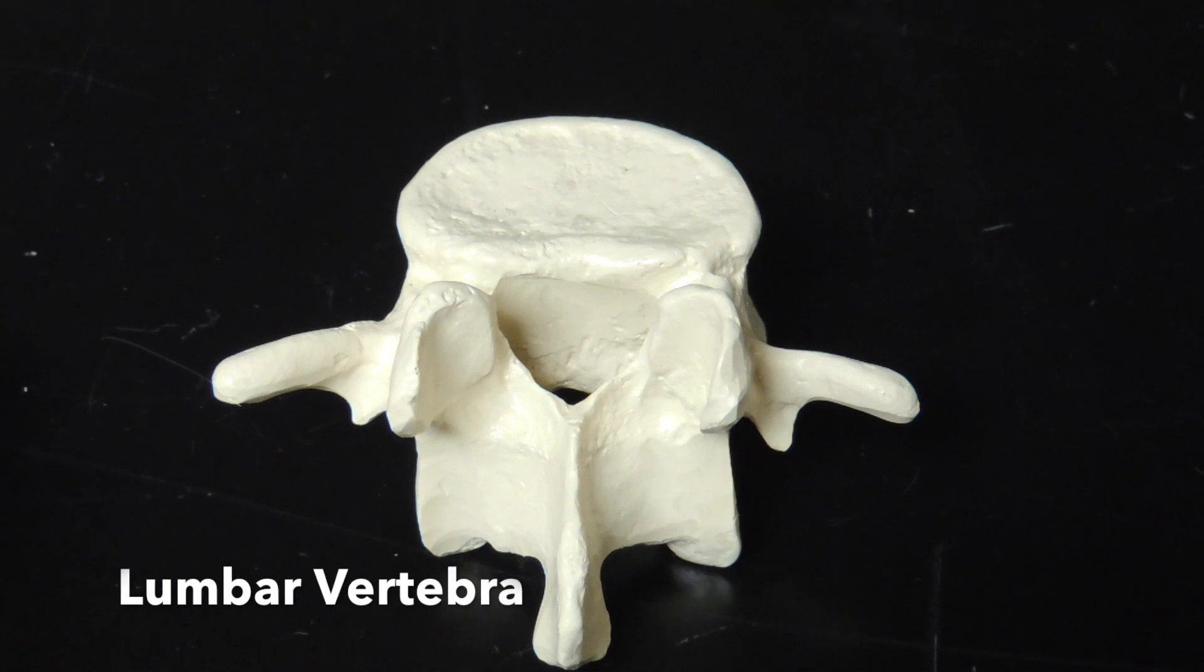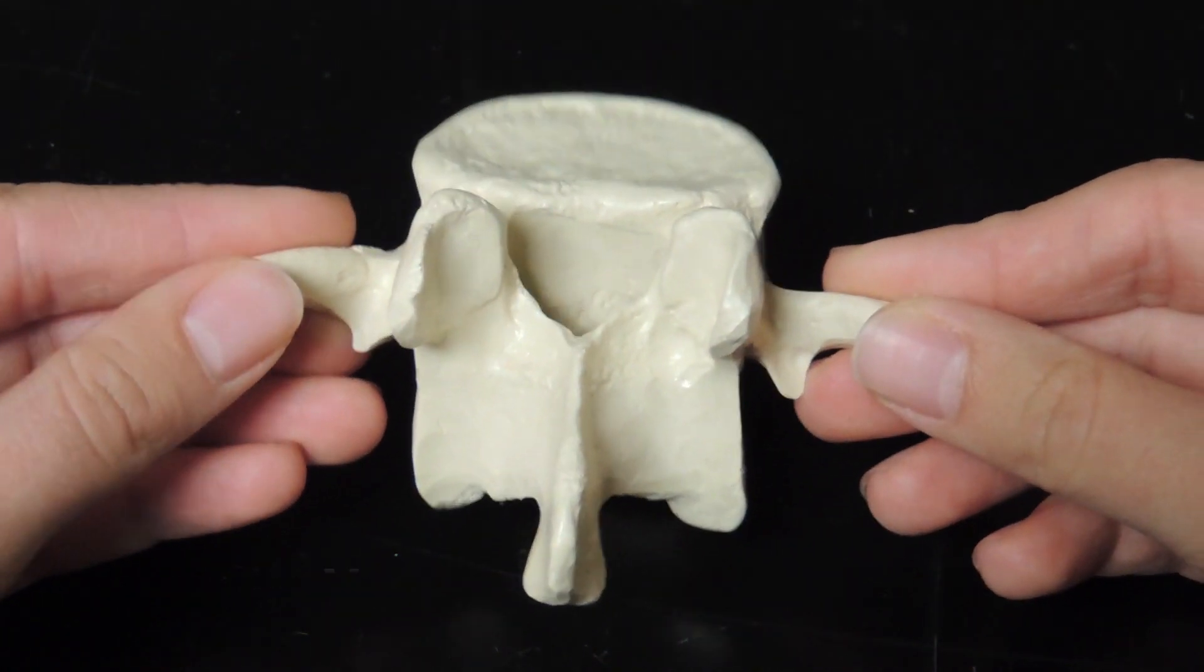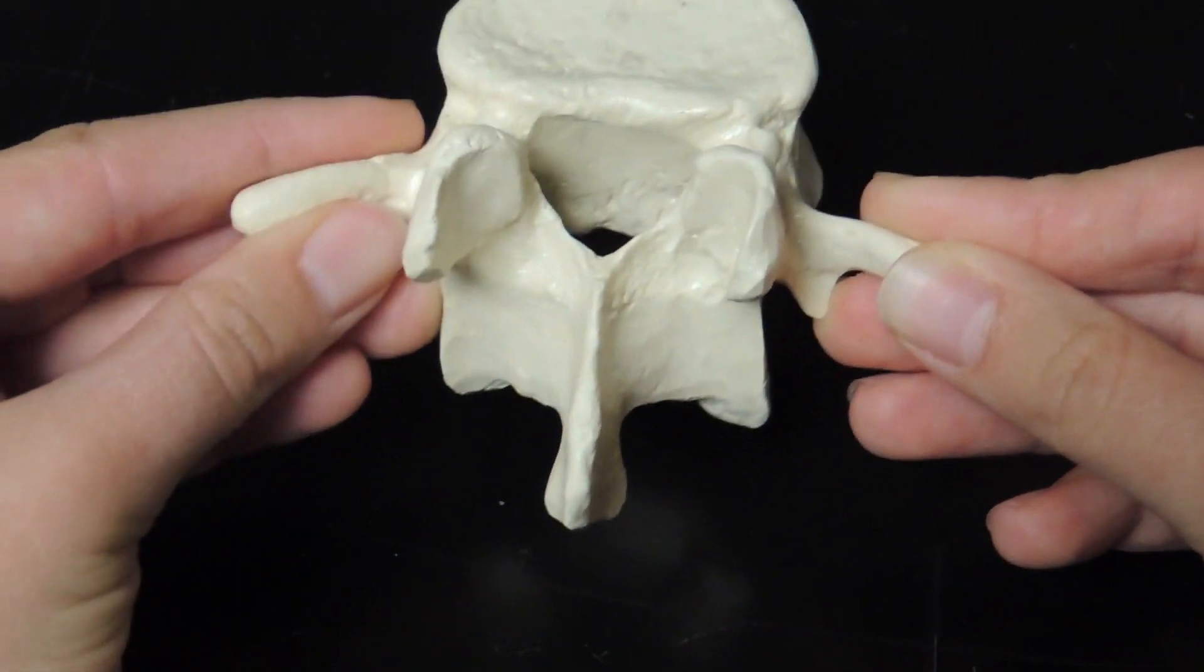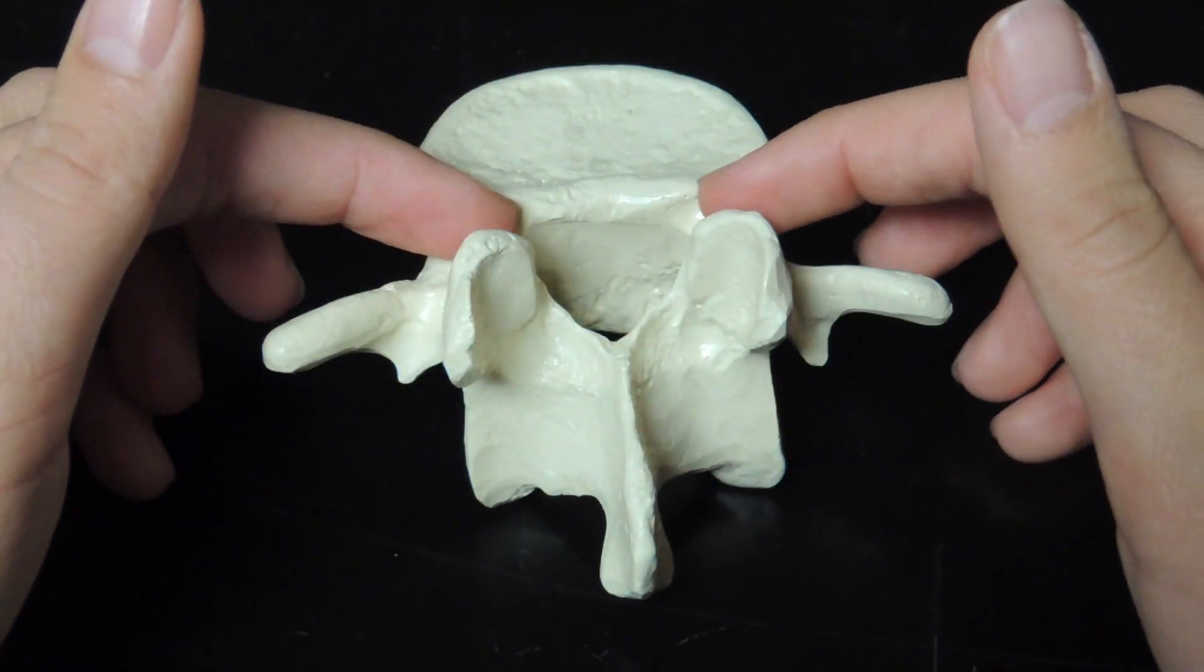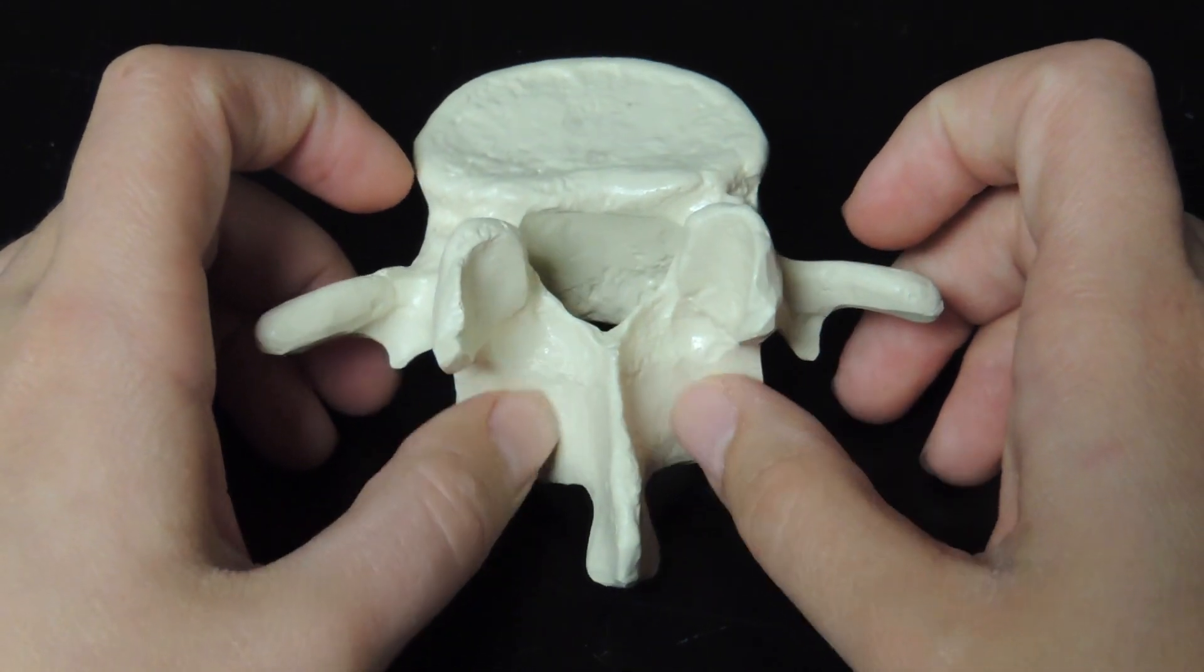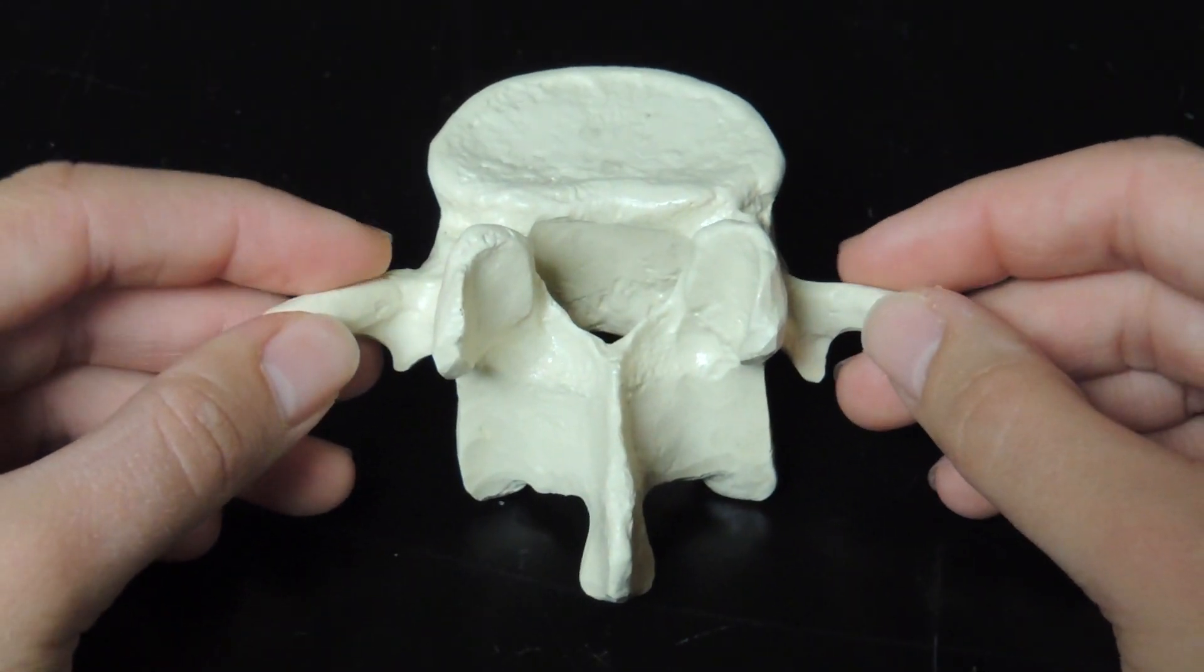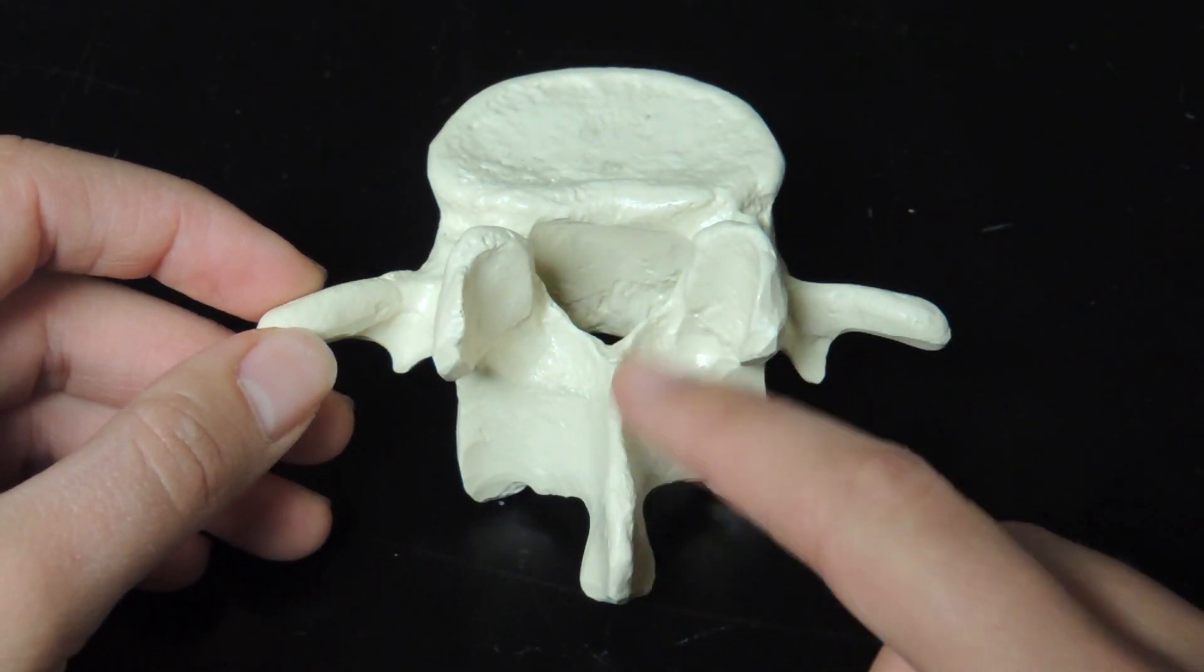This is a lumbar vertebra. There are five lumbar vertebrae. Like the others, there's a body, two pedicles, lamina, transverse processes, and a spinous process.